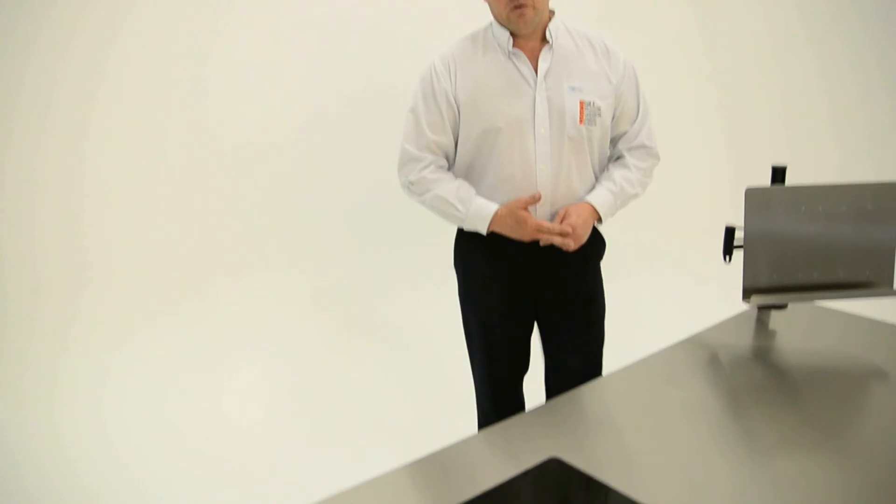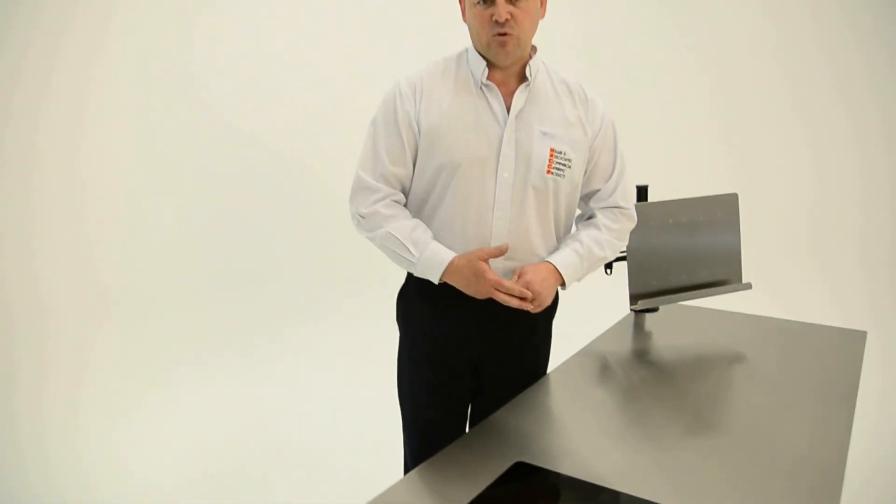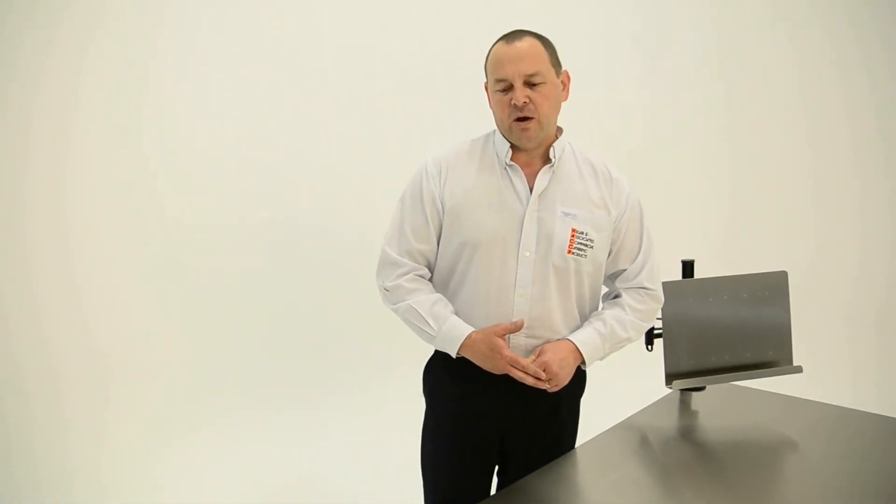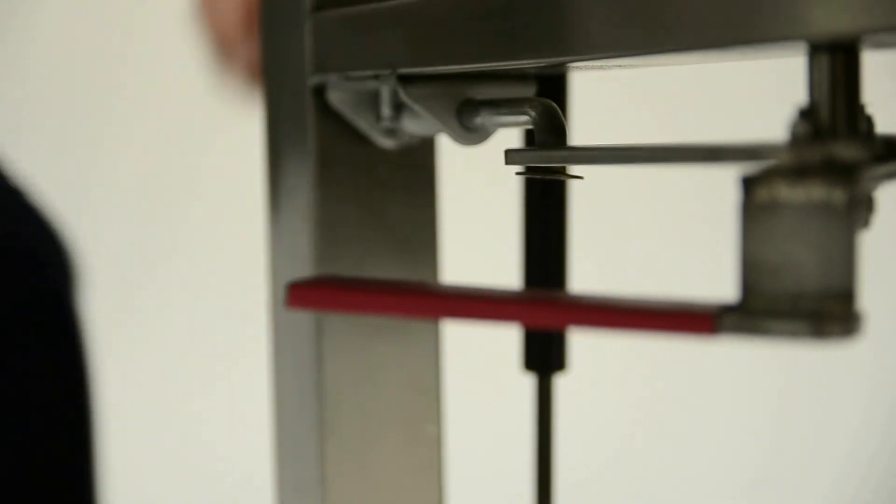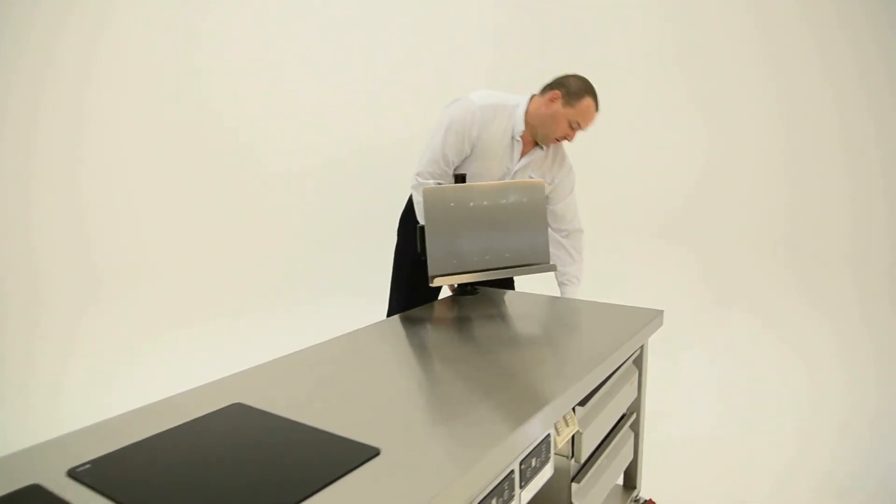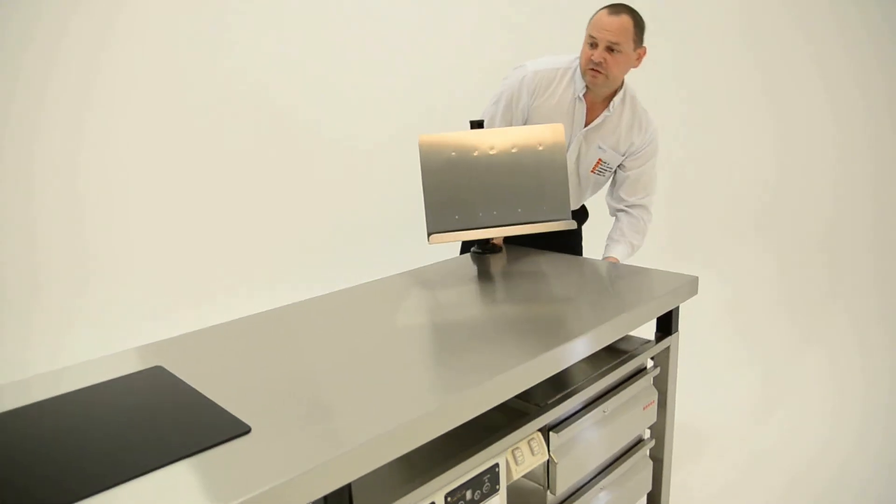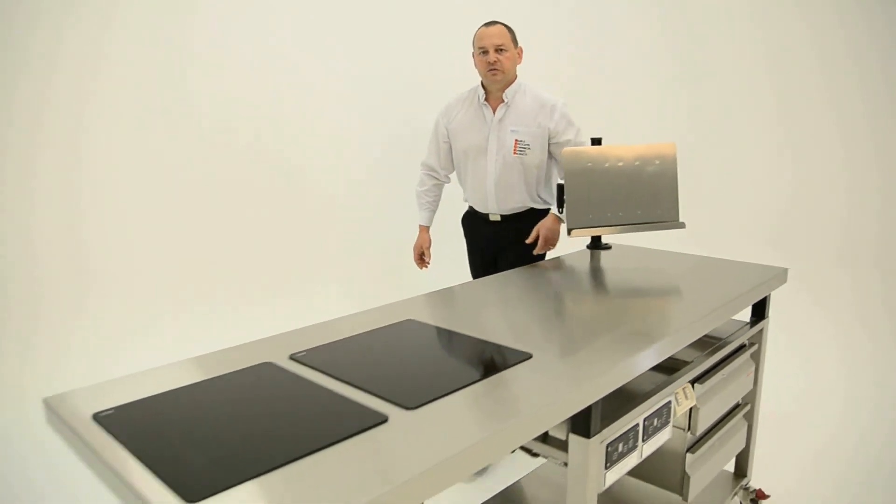The beauty of this unit though is that it's not just a disabled cooking station, it's also able to be adjusted to suit able-bodied people. I'll show you how. We release the mechanism under the bench, and it pops up on its own with the assistance and locks into position.